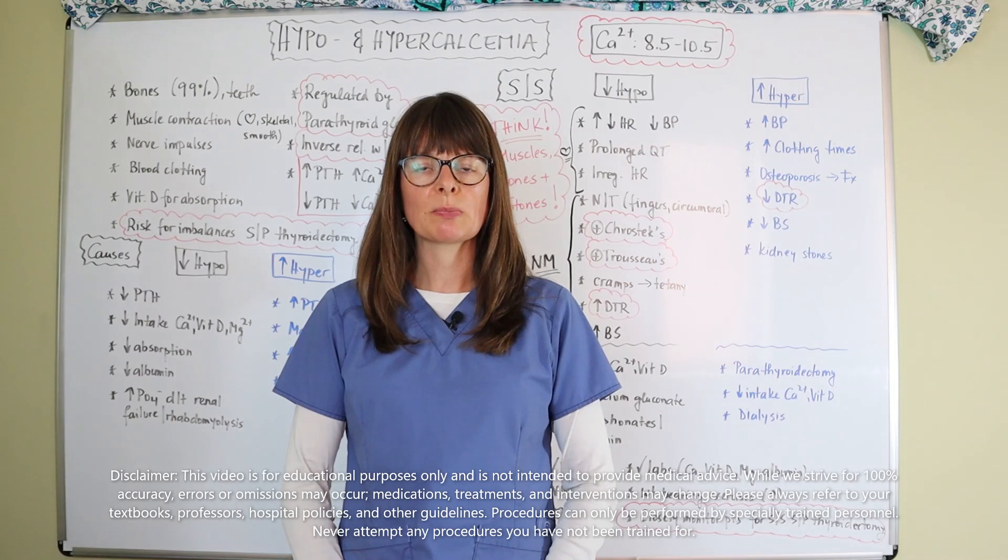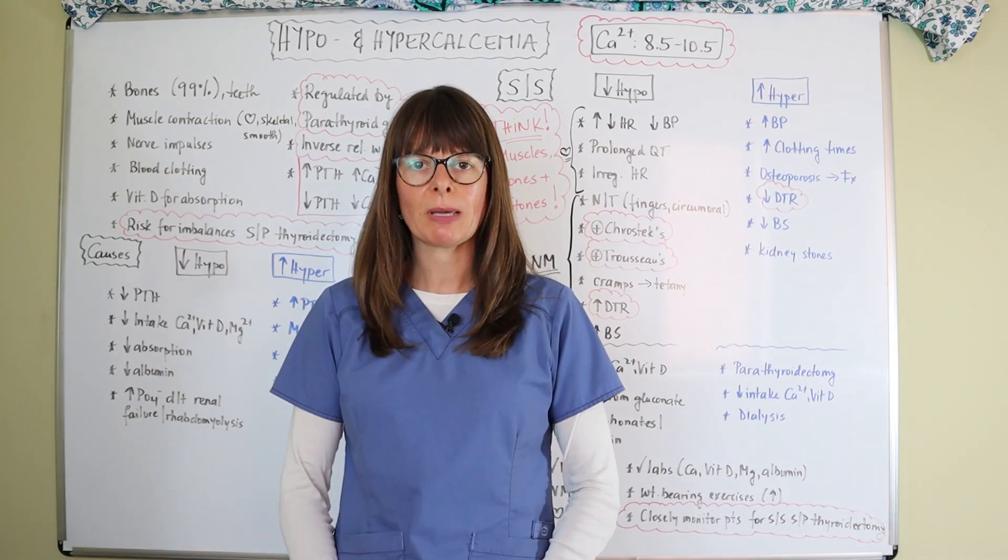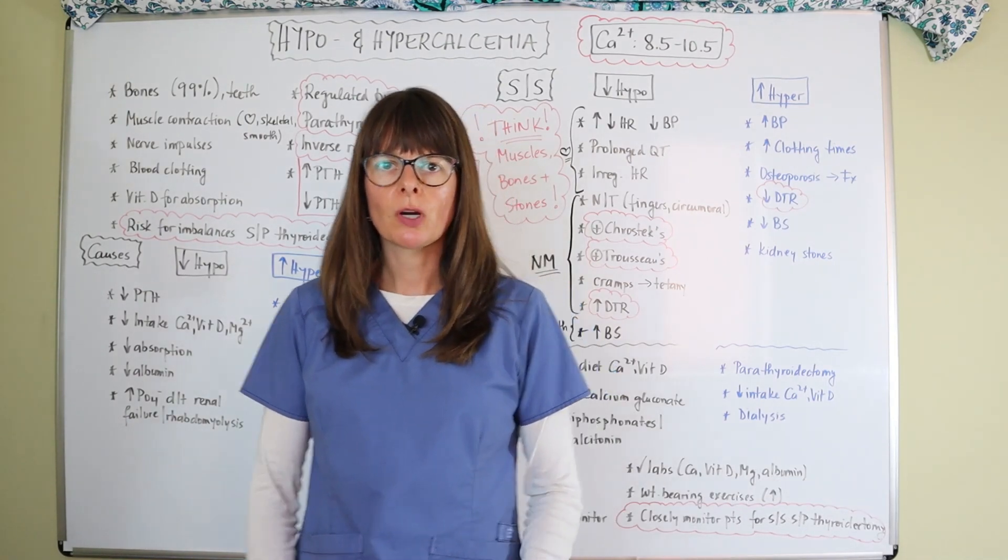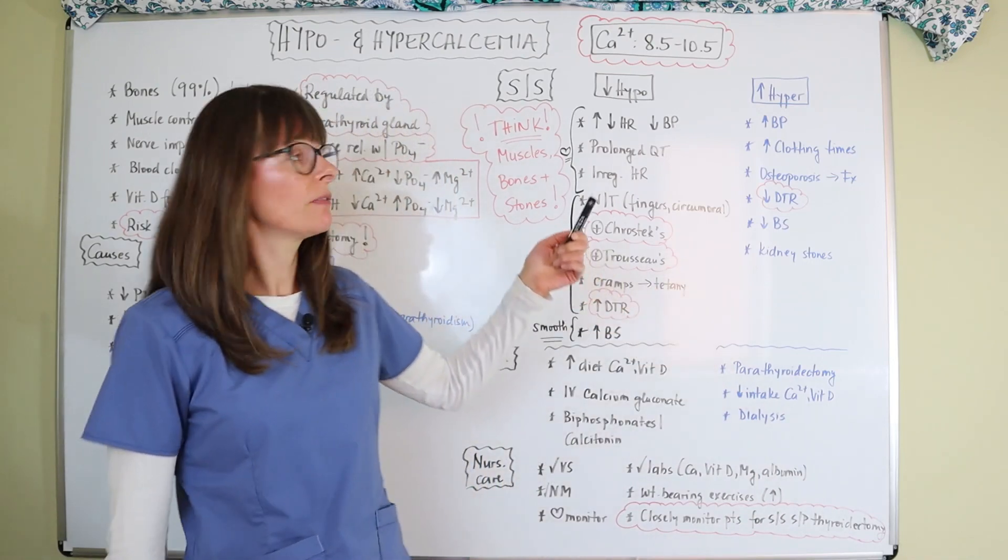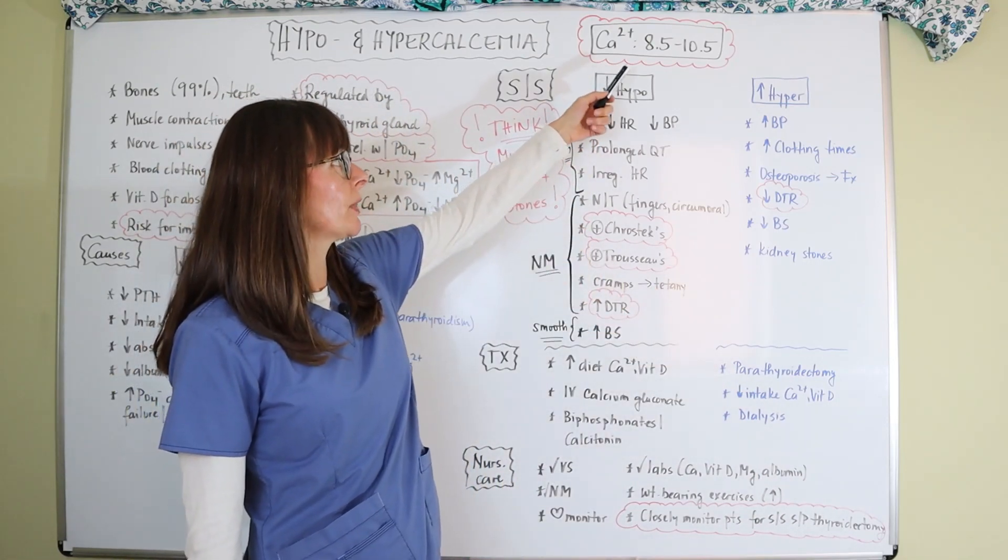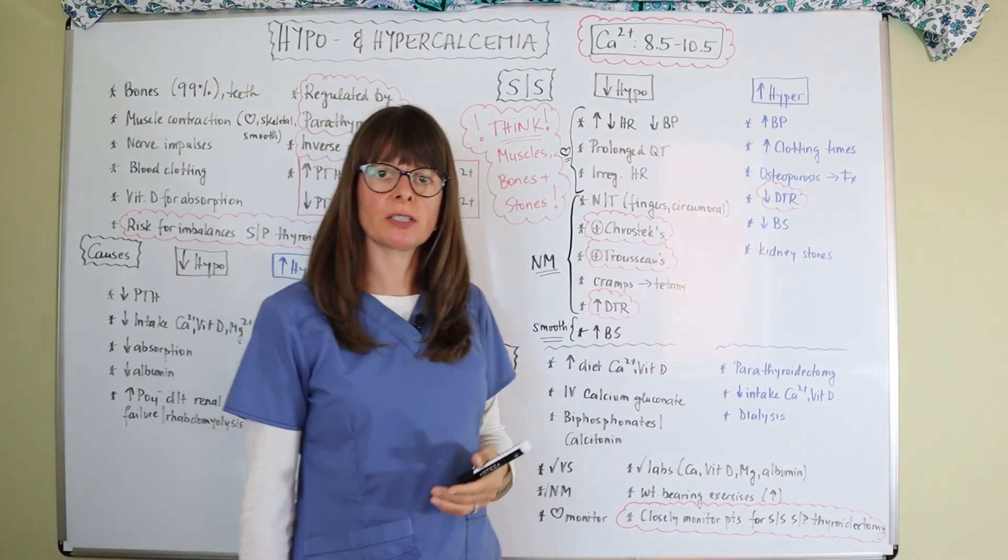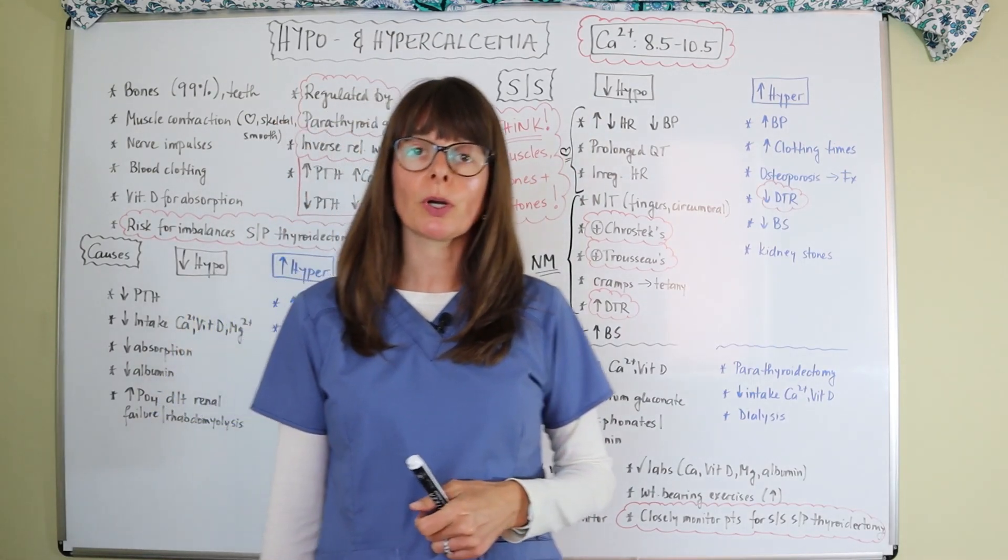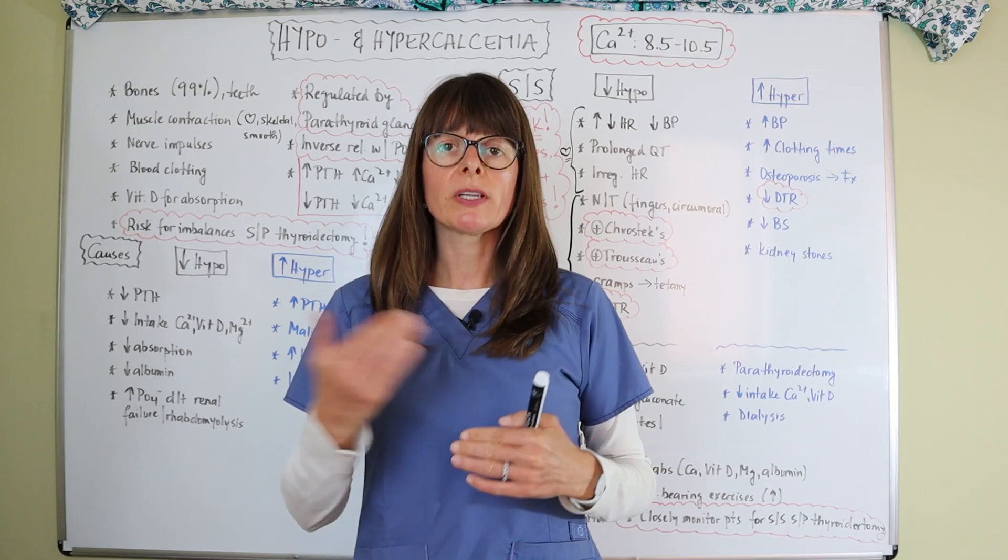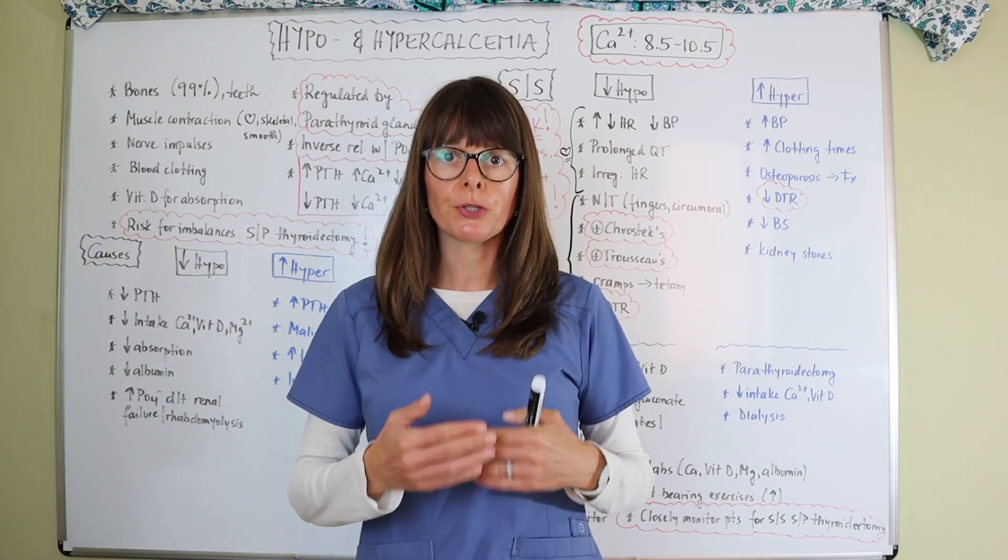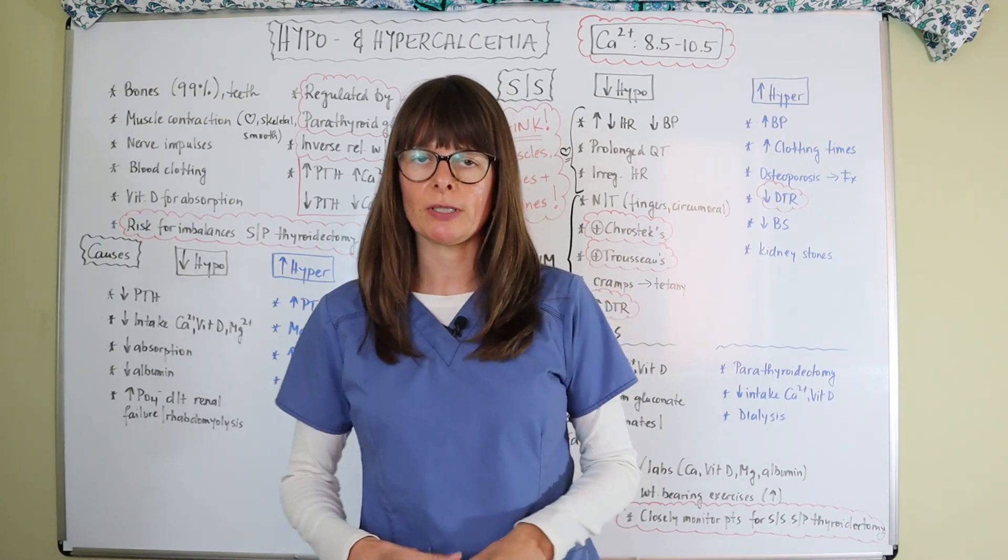Hi, welcome to Nursing School Explained and this video on calcium imbalances. For quick reference, normal calcium levels in the serum are typically 8.5 to 10.5. But as I usually point out, always check the reference values for the lab that you're working with to make sure that you know what is considered normal and abnormal for your particular lab and your patient.